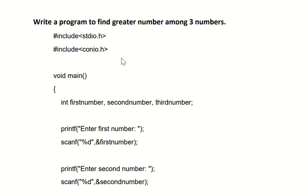First of all, hash include stdio.h and hash include conio.h. After that, the void main function — open the bracket. And then, as we are asking the user to enter three different numbers, we require three variables. So here we have declared three variables with the data type integer.